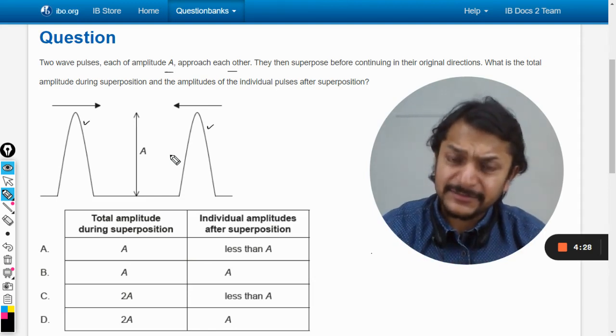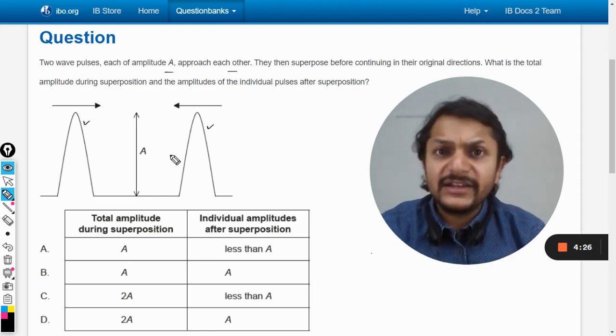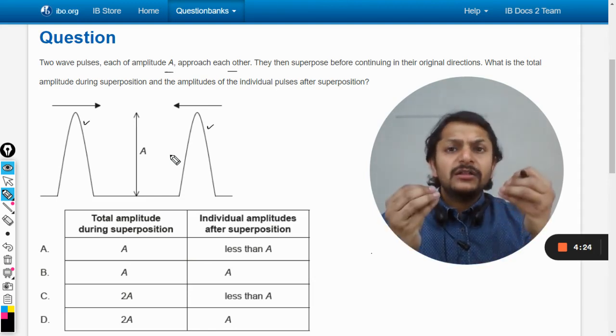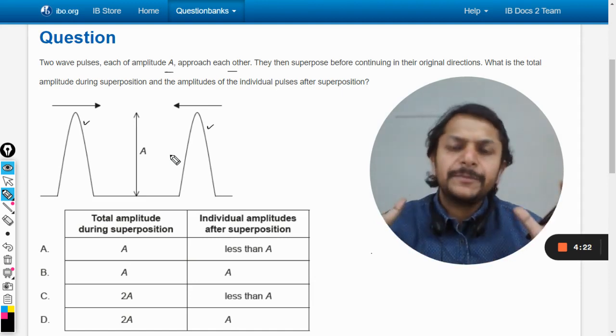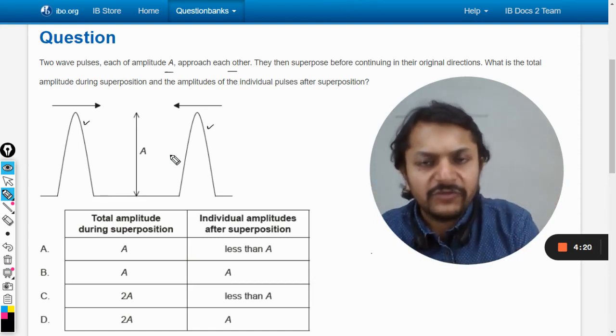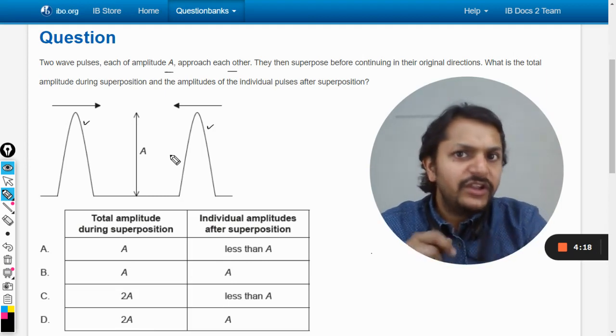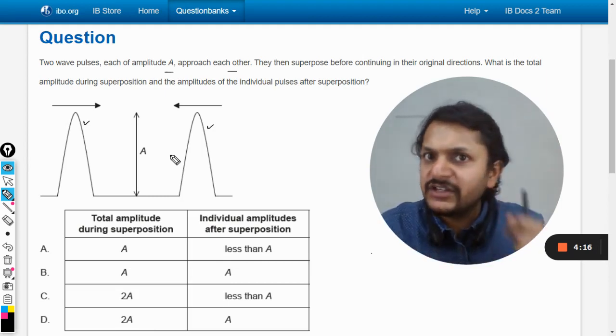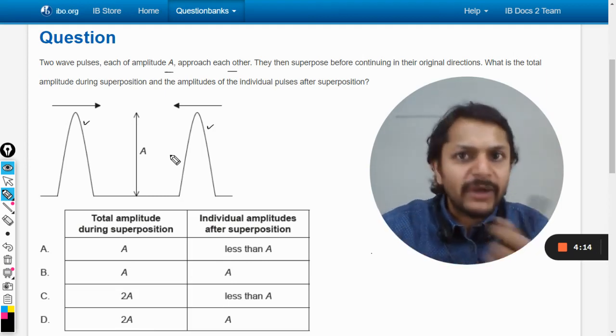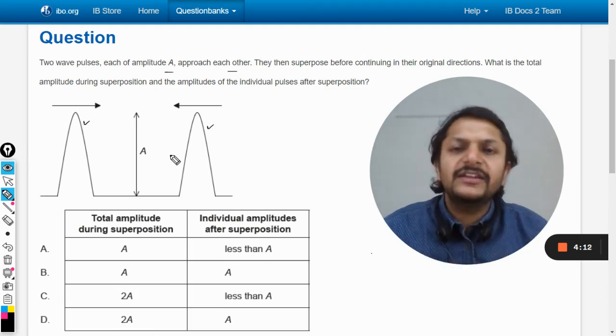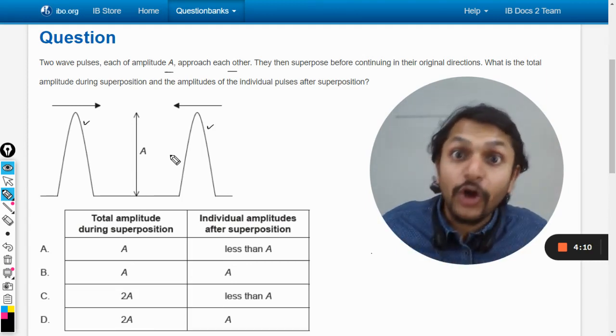As far as the amplitudes are concerned, I'll tell you they are just added algebraically. If they are in the same direction it will be A1 plus A2. If they're in the opposite direction, like one is trough and another is crest, it would be A1 minus A2. Clear-cut, there is no third option available.